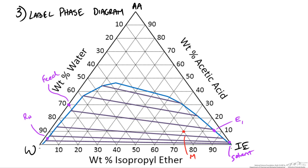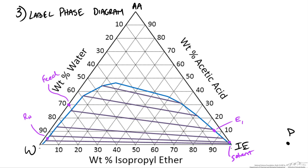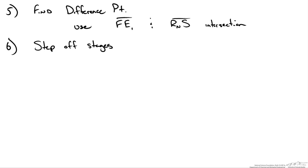The next thing to do is find our operating difference point to start stepping off stages. We take the feed and the extract points and draw a line through those, then do the same from our raffinate through our solvent point. Where these two lines intersect is our main difference point, labeled P. We no longer need those two construction lines or the mixture point — we will use the difference point to step off stages, since it passes through points representing compositions of passing streams.